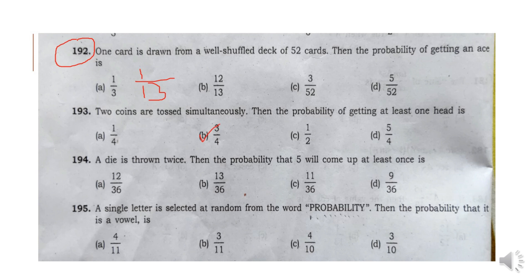Next: A dice is thrown twice. Then the probability that 5 will come up at least once is 11 by 36. Option C.